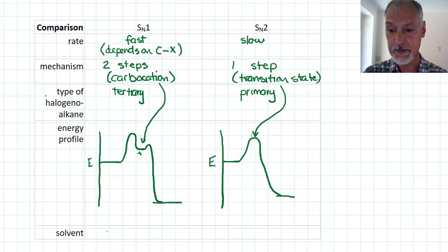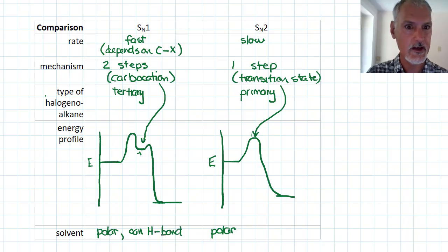Lastly, I'll just make a comment about the solvents that are used in these reactions. Both of these like polar solvents. However, to stabilize the carbocation, it prefers polar solvents that can H-bond. So we want polar substances that can H-bond with the carbocation. So that means perhaps things like hydroxide or amines would work well. On the other hand, in this case, we don't want H-bonding. We only want the substance to be essentially polar. So something like propanone would work rather well.